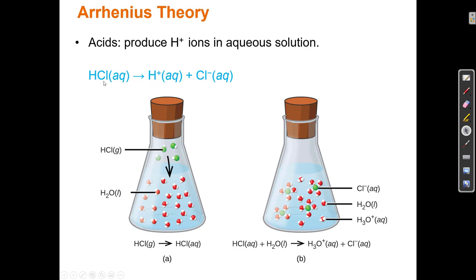We say if HCl is made out of H+ and Cl−, then it must be ionic, just like NaCl is Na+ and Cl−. But that's not true, because H is a non-metal and Cl is a non-metal. If both are non-metals, this is not an ionic bond between these atoms — they're stuck together with a covalent bond. HCl is not ionic; they're both non-metals. HCl is covalent, and when HCl goes into water, a chemical reaction occurs.